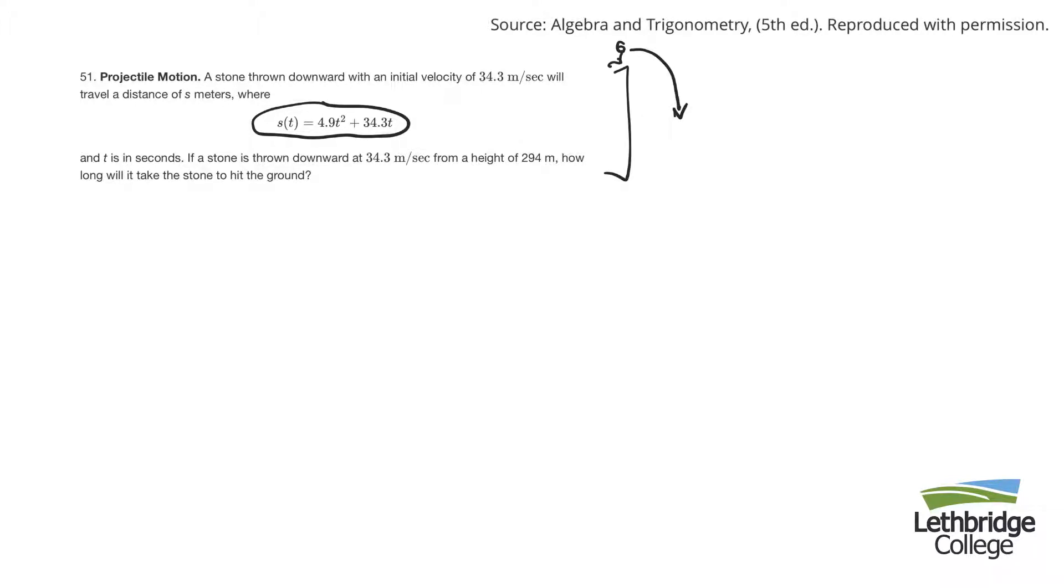It looks like this path is a parabolic one that's defined by that function. Initial velocity, all of that stuff would be involved in the formula. They say from a height of 294, so I'm sitting 294 meters up. How long will it take the stone to hit the ground?